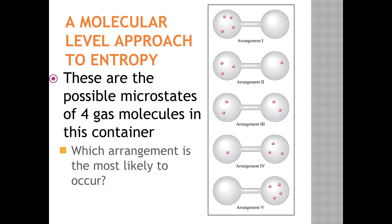In case 100 molecules is too many to think about, let's look at just four molecules of an ideal gas. If we use the same double bulb container but have only four molecules, these five arrangements are the potential outcomes. Each arrangement is known as a microstate. In arrangement one, all four are on the left. In arrangement two, it's three left and one right, and so on, all the way to arrangement five, which has all four on the right.